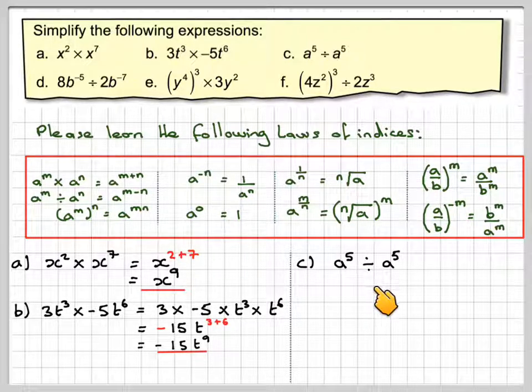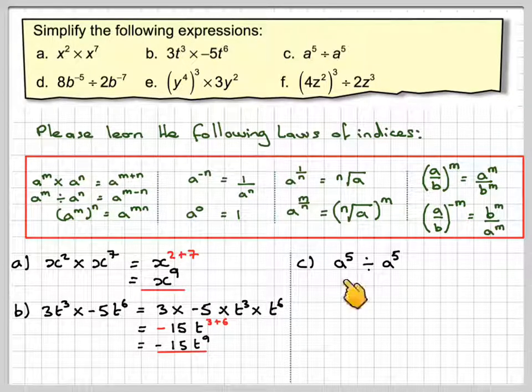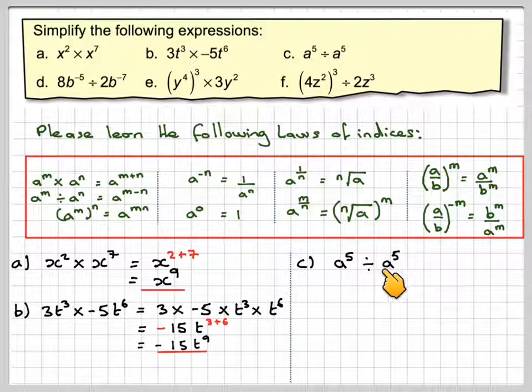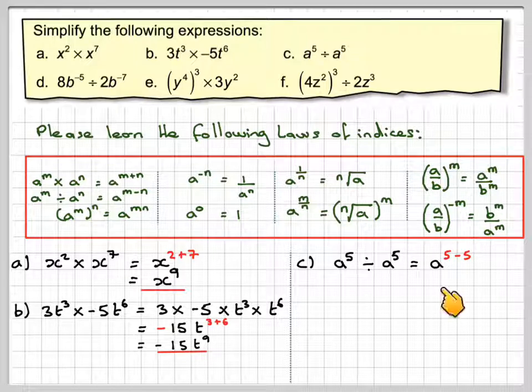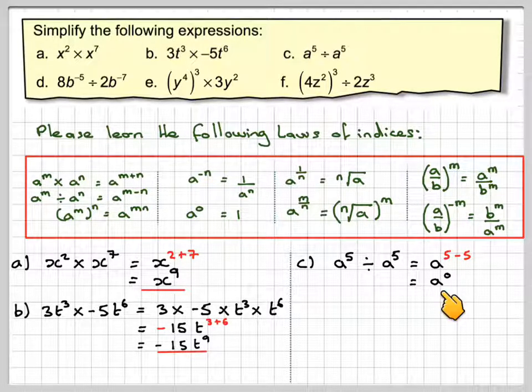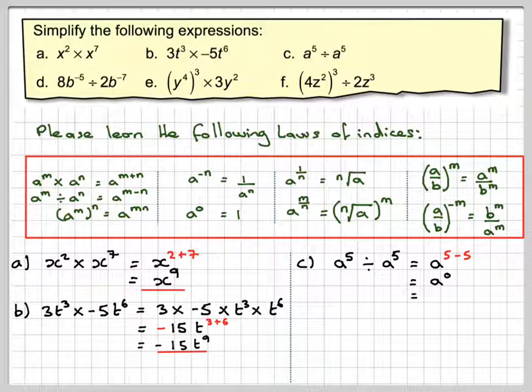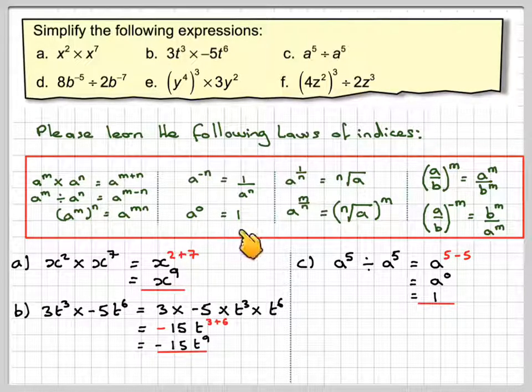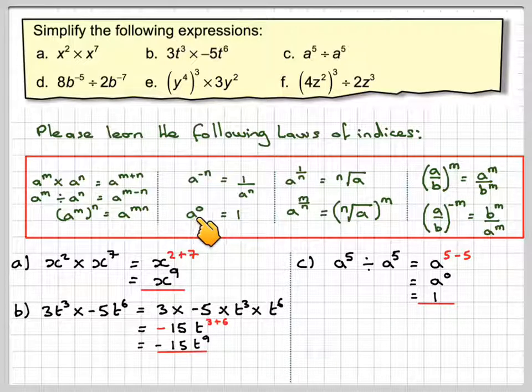C, a to the 5 divided by a to the 5. Well, if you divide something by itself, you're always going to get the answer 1. But if you apply the rules of indices, because we're doing a division, we subtract the powers, we get a to the 5 minus 5, which gives me a to the 0. And we know that a to the 5 divided by a to the 5 is actually equal to 1. So what we've done, we've shown that this rule here is actually true. Anything to the power of 0 is actually 1.